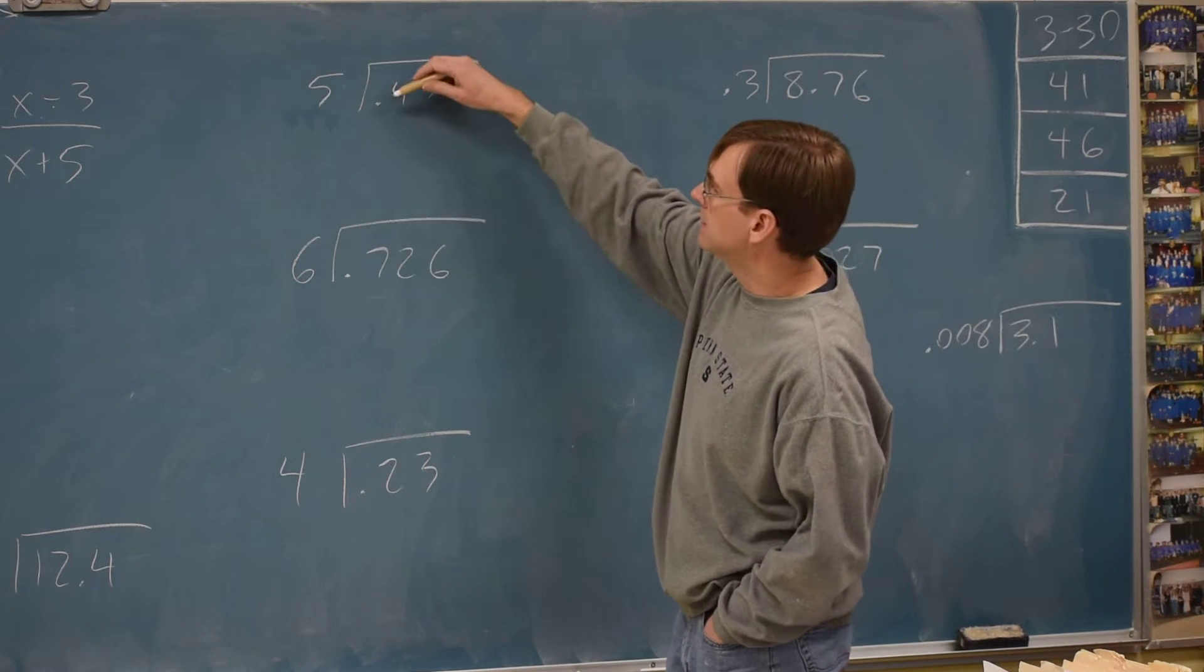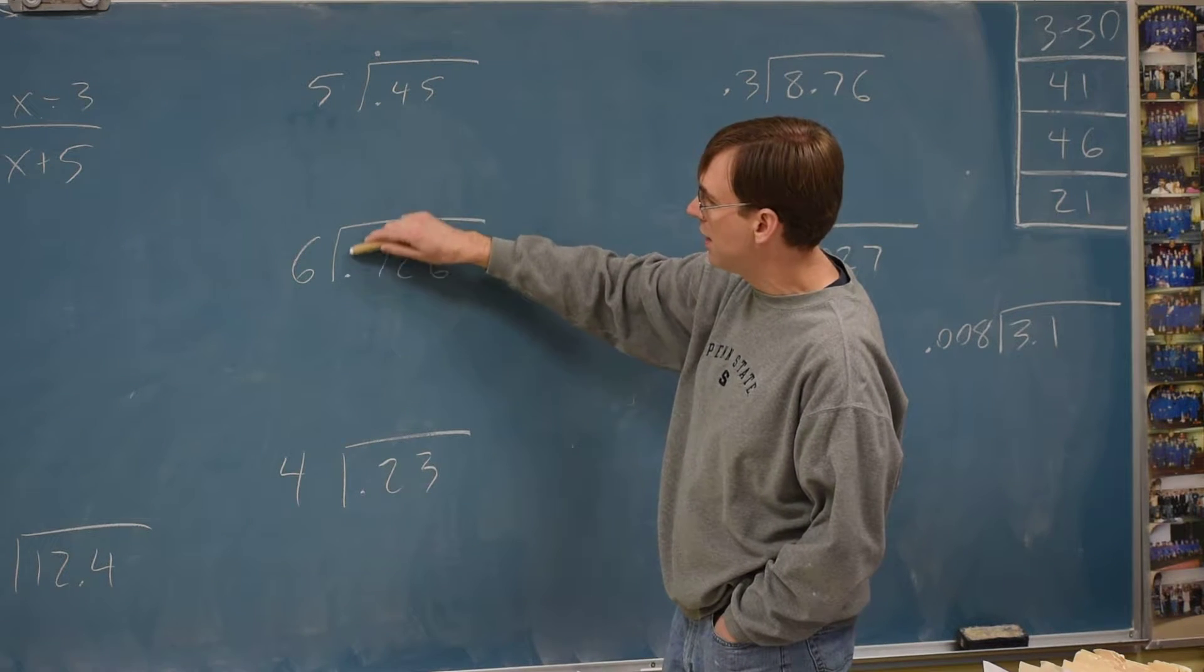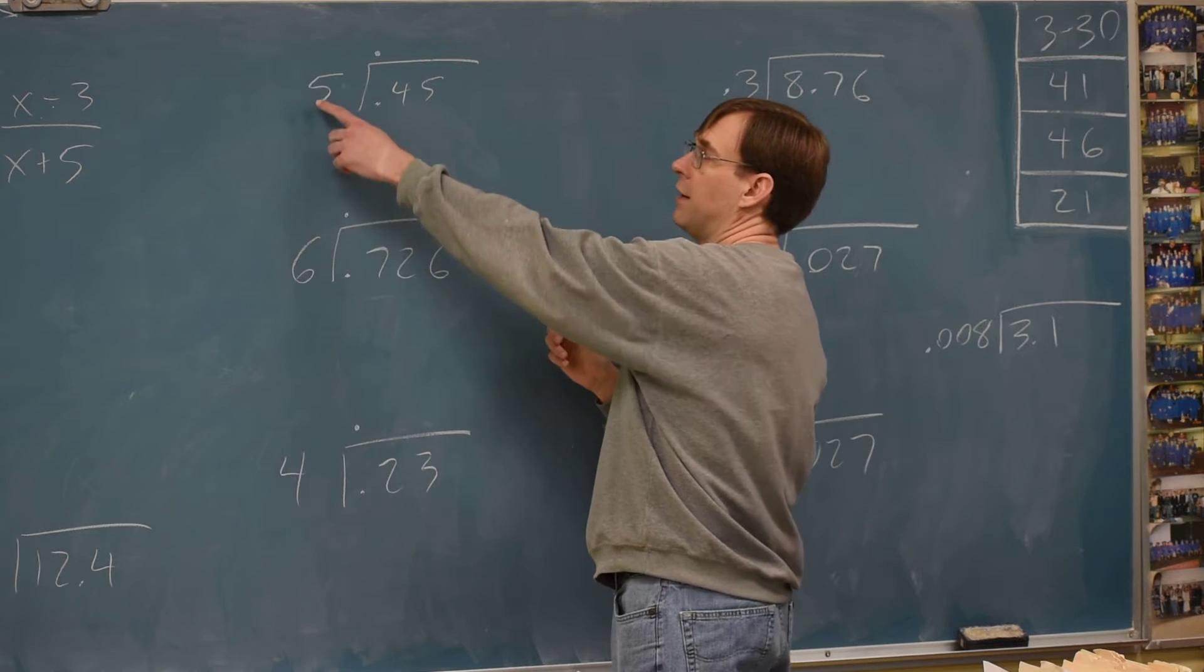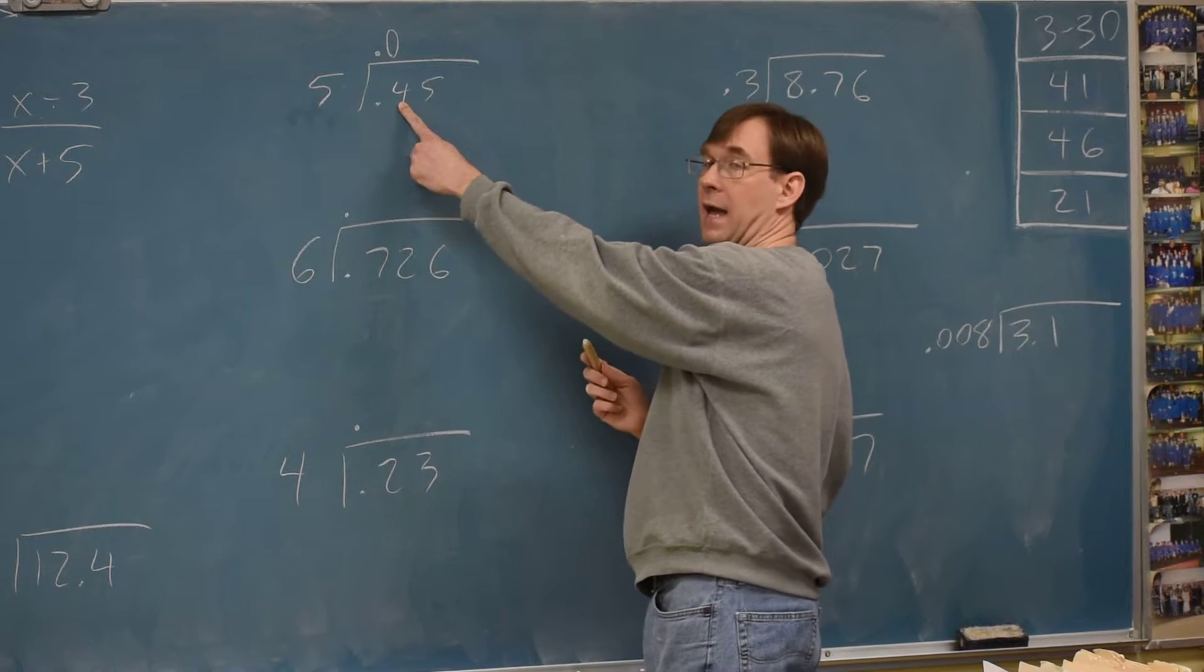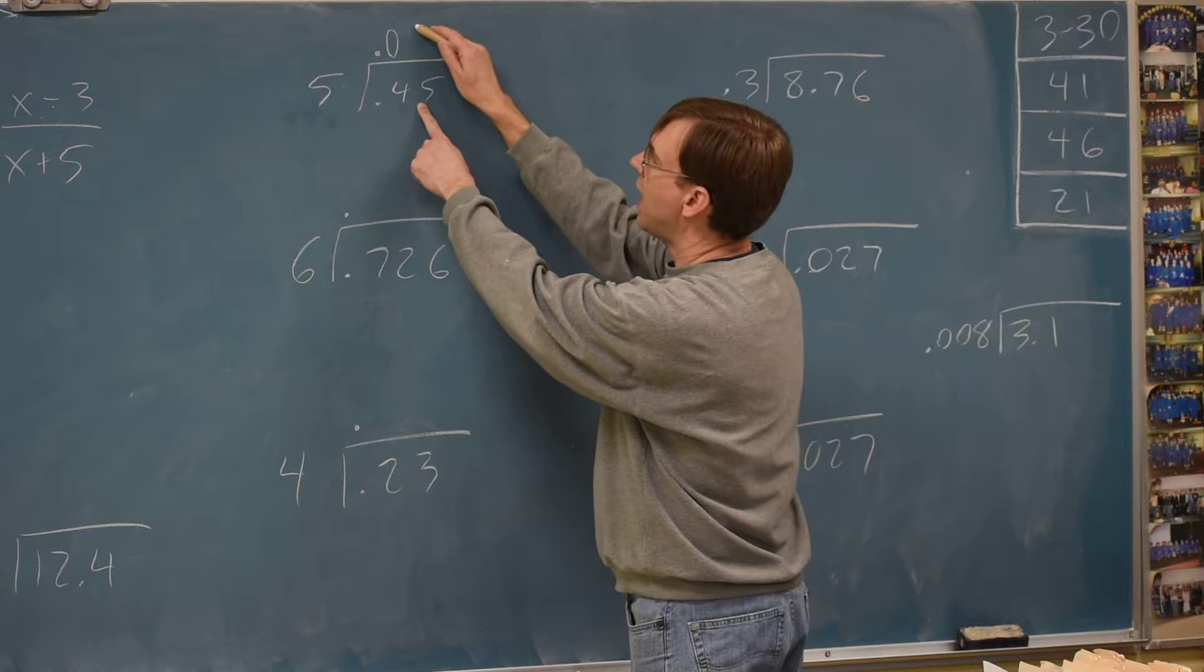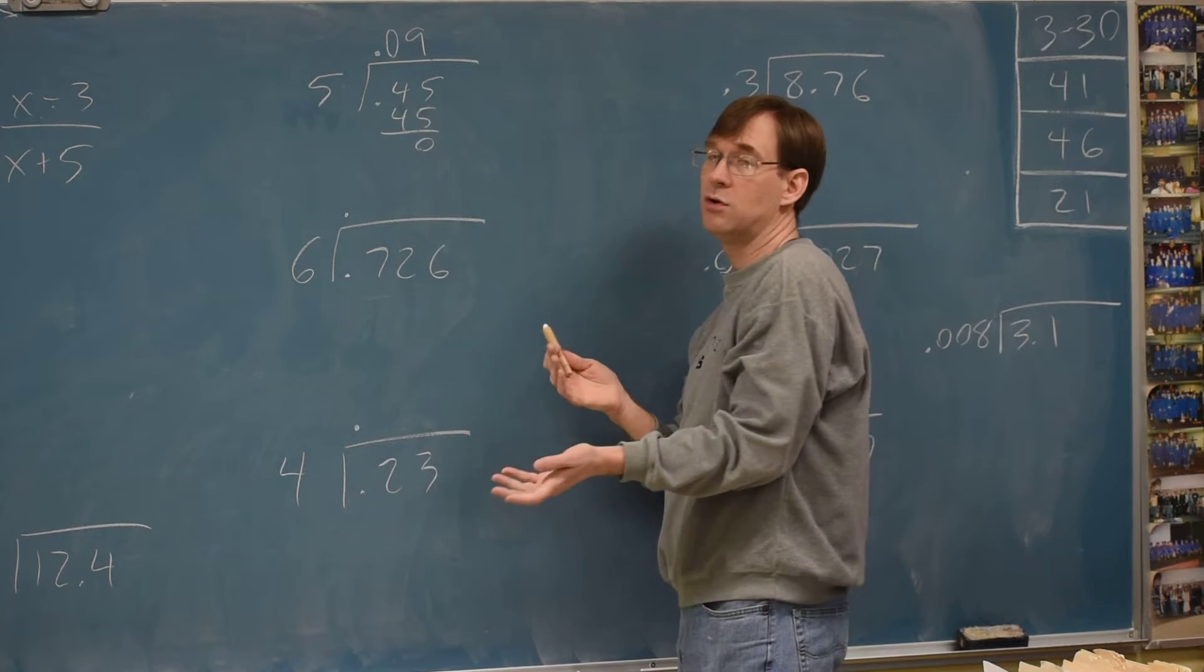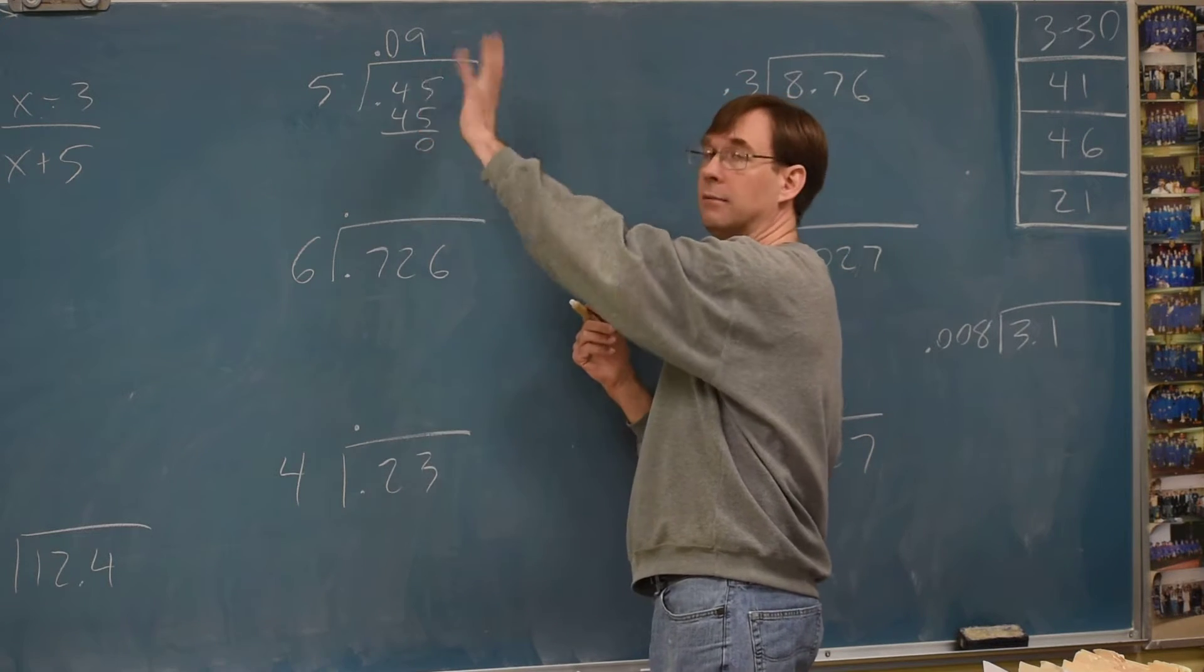So what we do for these is the decimal has to go into the answer straight up from where it was originally positioned every time. Straight up. So then we just divide. Five can't go into four. So above the four I need a zero to fill that space because four isn't enough to handle that. Five does go into forty-five nine times. Point on nine. That's it.